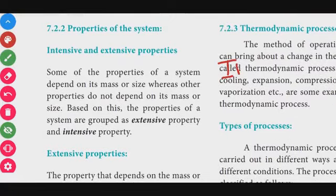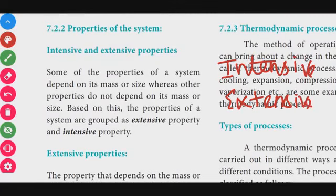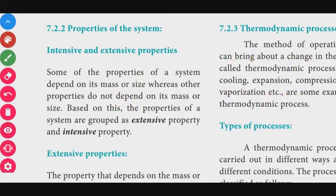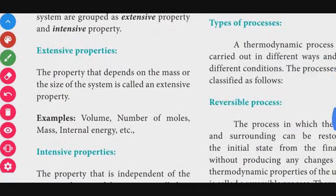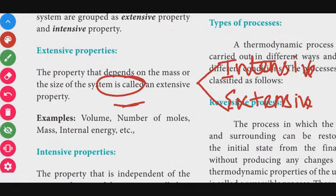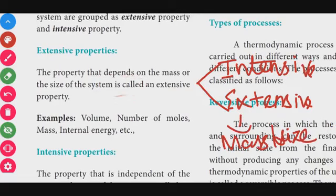Thermodynamic systems have properties: intensive property and extensive property. Some properties of a system depend upon its mass or size. An extensive property depends upon the mass or size of the system.